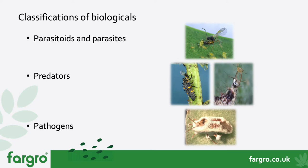Finally, pathogens are disease-causing organisms specifically targeting insect pests. An example is the product Naturalis, which is an entomopathogenic fungus. It is compatible alongside biologicals so we can integrate it into an IPM program. Once sprayed onto the pest species, it gets into the pest, kills the host, and then sporulates out.